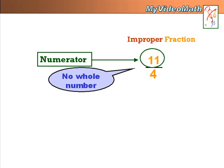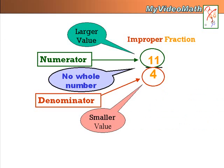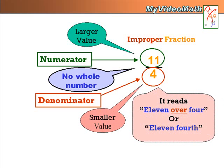Secondly, the upper portion of the fraction is called the numerator, and the numerator has larger value. And the lower portion of the fraction is called the denominator, which has smaller value. So this improper fraction reads 11 over 4, or 11 fourths.